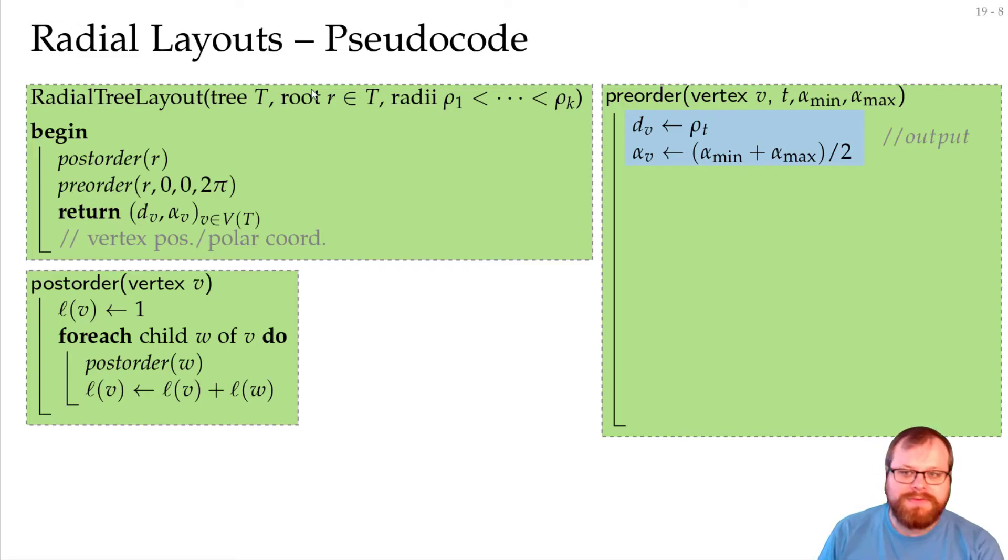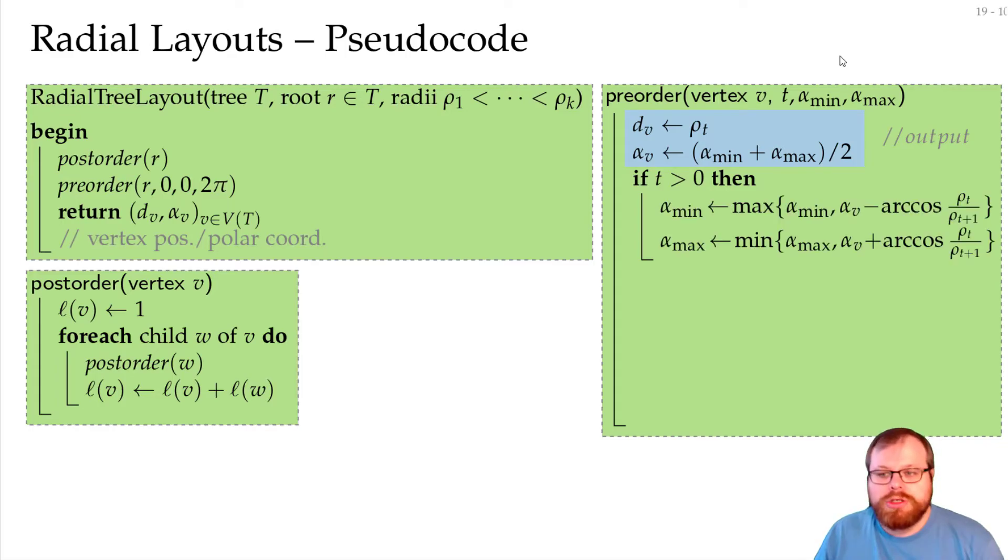Now what we still have to do is for all the children we have to again recursively call this pre-order, so that means we have to figure out for each of them what is their layer, what is the minimum angle and what is the maximum angle we assign to the subtree. If we are not in the root, then first we want to take this minimum and maximum angle, and we want to restrict it like we had on the previous page. We only want to use parts of the circle where we are sure we don't get any crossings. So for the minimum angle we check is it far away enough or do we have to restrict it to the angle of v minus arc cosine of rho t divided by rho t plus 1, and the same for the maximum angle.